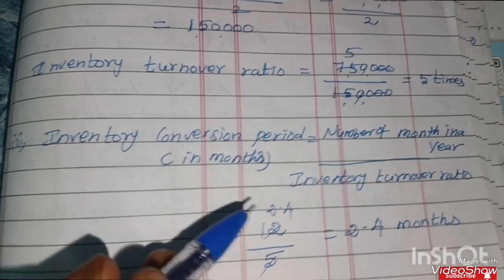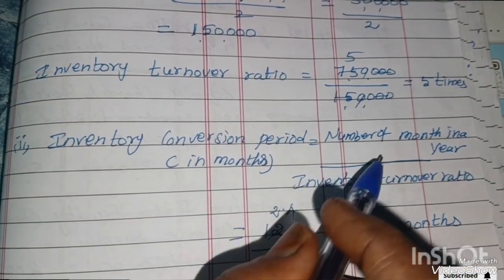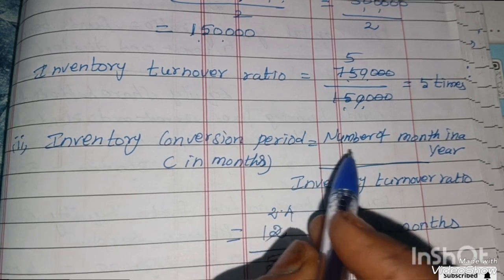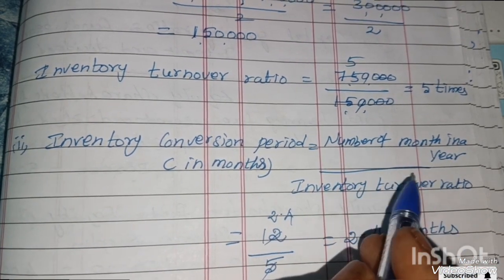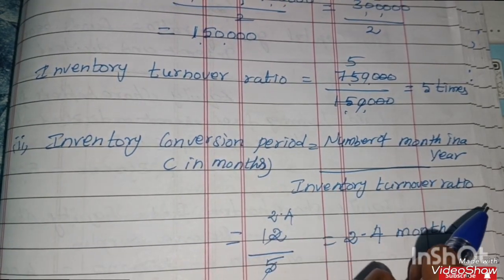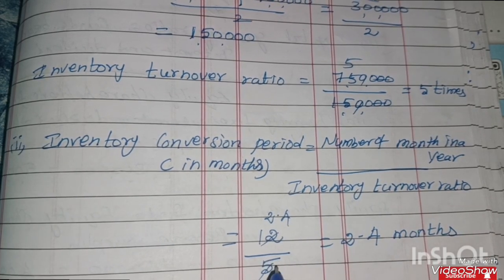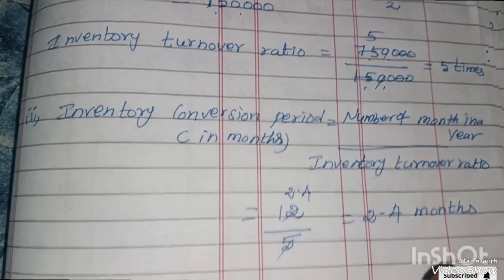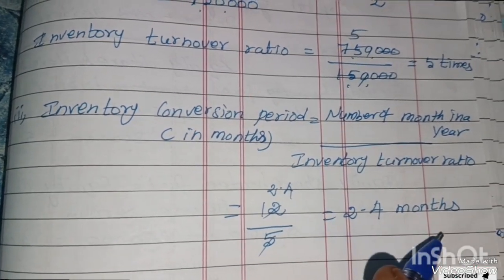Next, calculating the Inventory Conversion Period. The formula is: Inventory Conversion Period equals number of months in a year divided by Inventory Turnover Ratio. So, 12 divided by 5 equals 2.4 months. This is the answer for this sum.